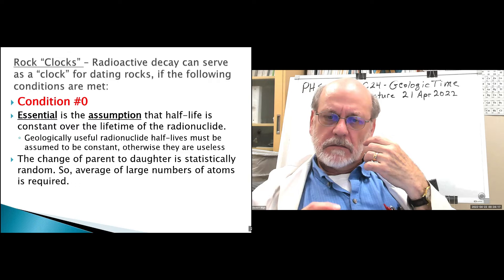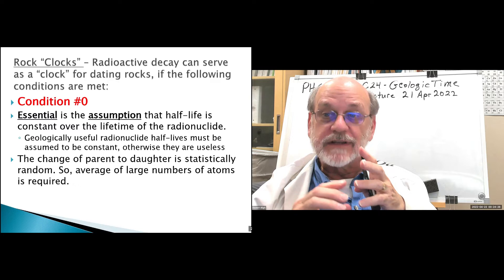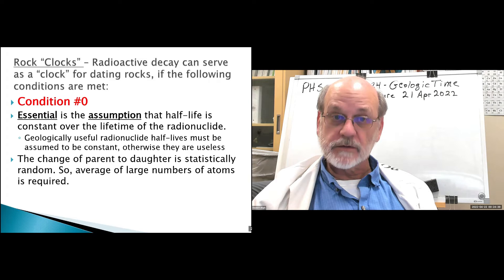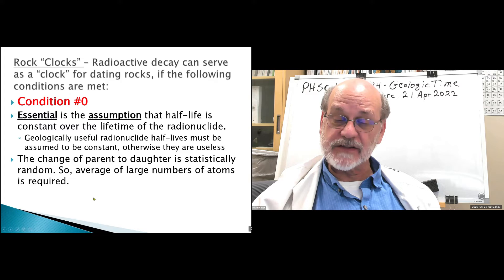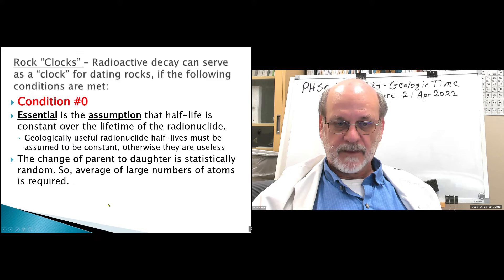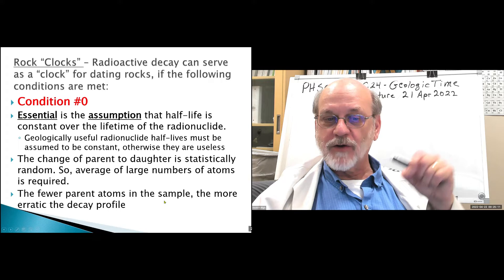The change from parent to daughter is a statistically random occurrence. The smaller the sample size, the more difficult it is to observe the decay — you need a large sampling of radionuclides to average out the statistical randomness. So the smaller the sample size gets, the fewer the parent atoms, and the more erratic the decay profile.